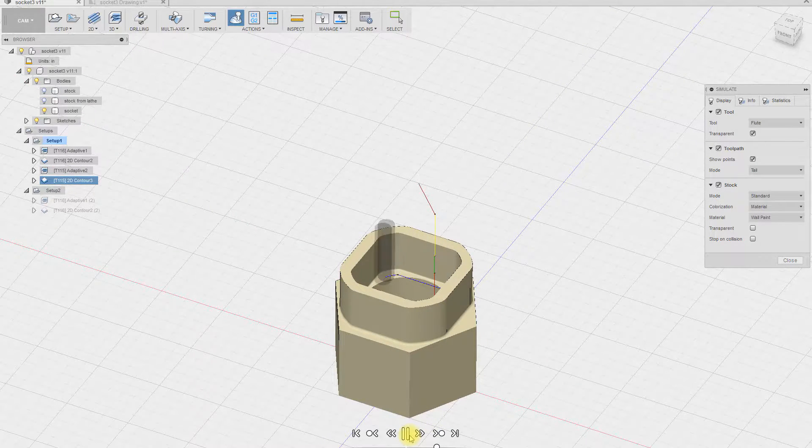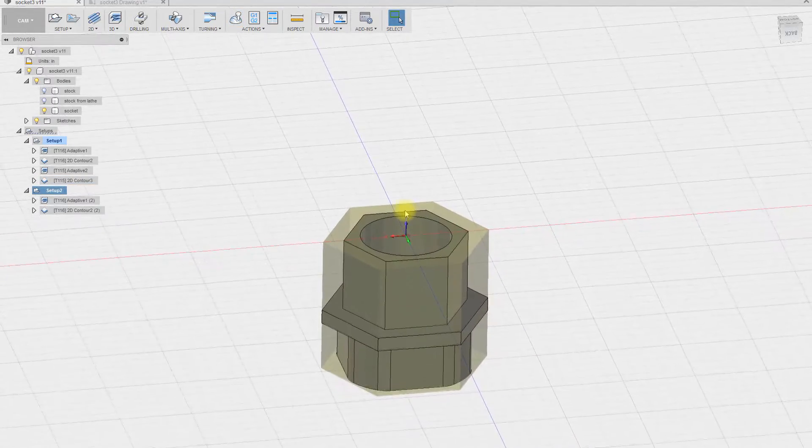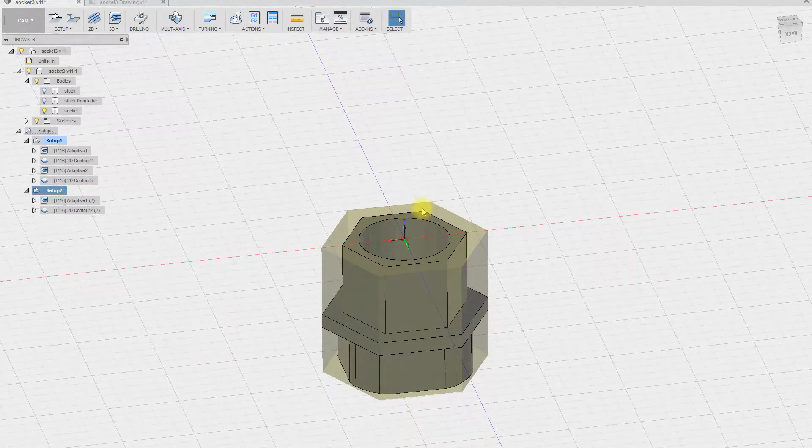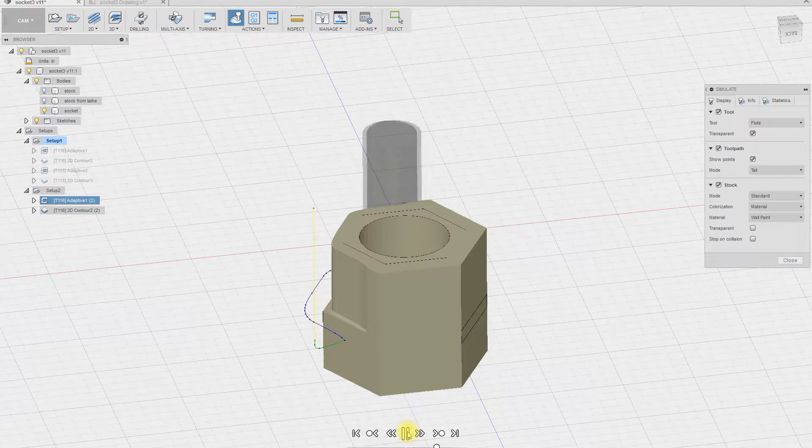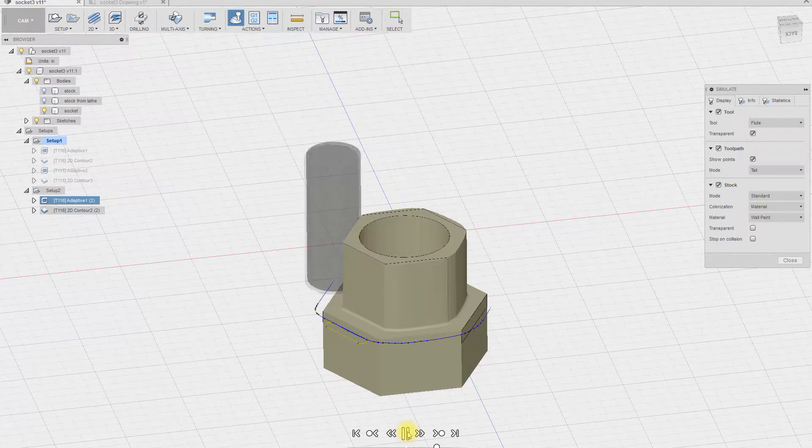Finally, a 2D contour operation is used to finish the sides. The second setup is simply to reduce the hex to 3/4 inch. A 3/8 inch end mill is used to adaptively clear most of the material.